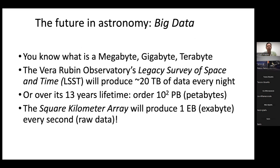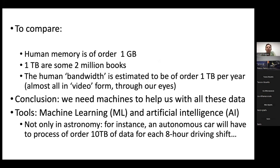I want to move to the second part of this talk, which is on big data — the future of astronomy. The Vera Rubin Observatory's LSST will produce about 20 terabytes of data every night, and over its 10-year lifetime that becomes 100 petabytes. The Square Kilometre Array will produce one exabyte of data every second — raw data going into correlators. These are massive data rates. For comparison, the human memory is of order a gigabyte; one terabyte is equivalent to about two million books; and the human information bandwidth is estimated at about a terabyte per year, almost all from what we see through our eyes.